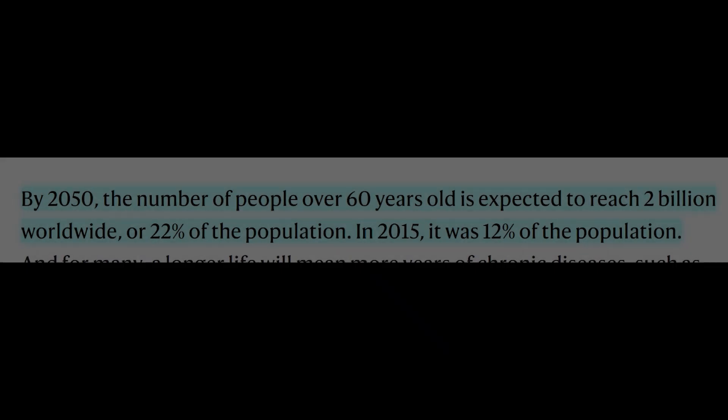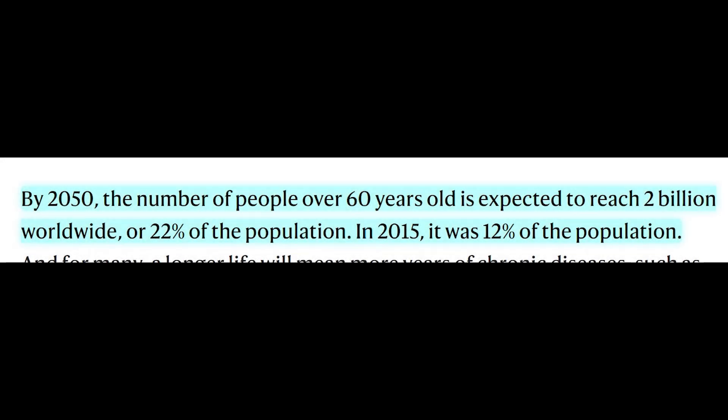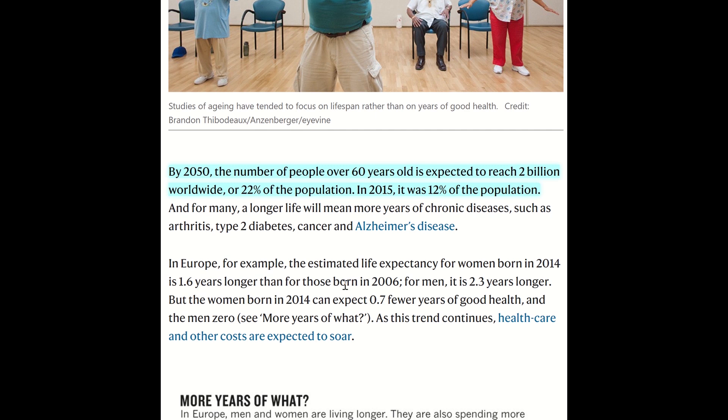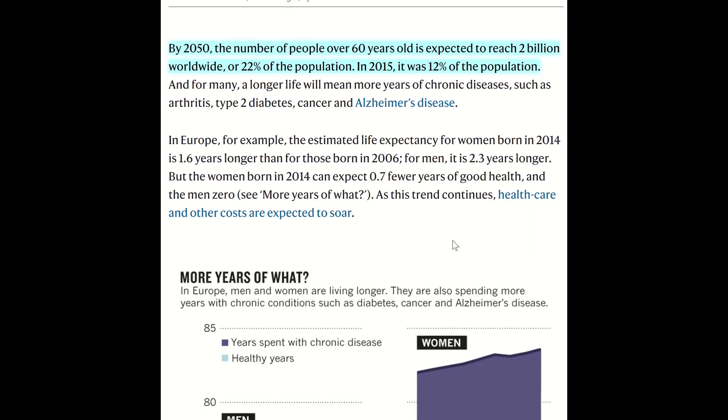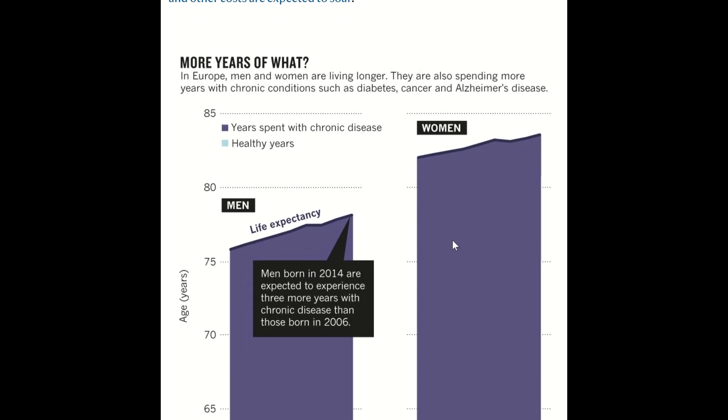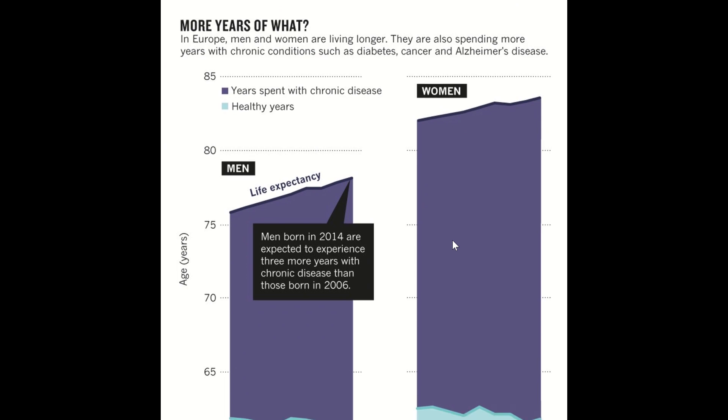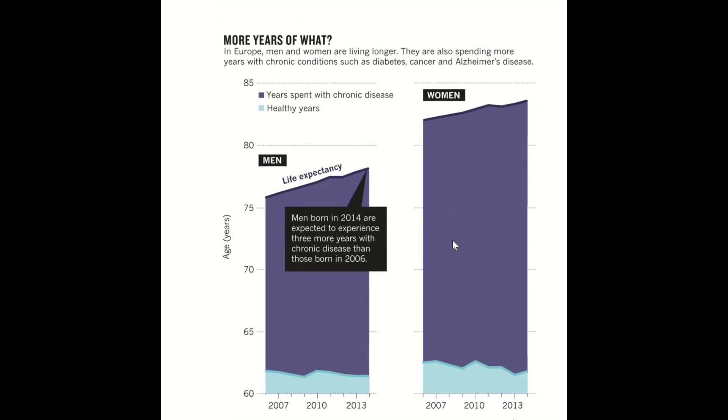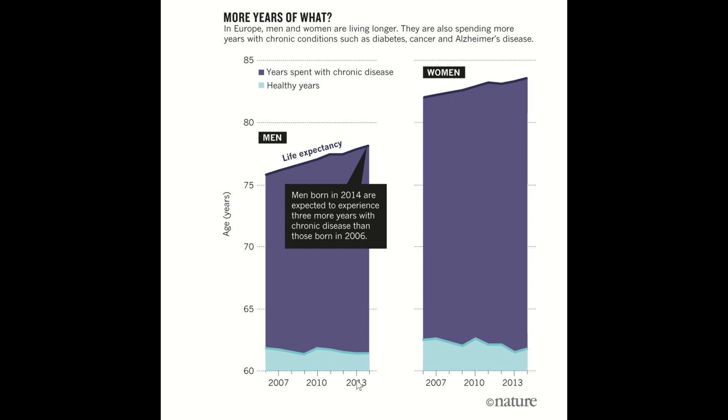Well, by 2050, the number of people over 60 is expected to reach 2 billion worldwide, roughly 22% of the population, whilst in 2015 it was only 12% of the population. However, whilst there is a trend of increasing lifespan, there's also a trend of increasing years spent with chronic diseases. This includes age-associated diseases such as diabetes, cancer, and Alzheimer's disease.